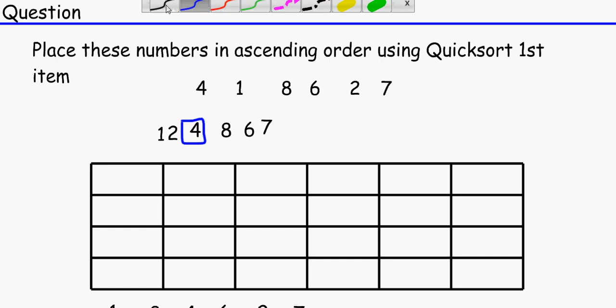So I'm going to write it out over. One, two, four, eight, six, seven. And that was our pivot. Four was our pivot.